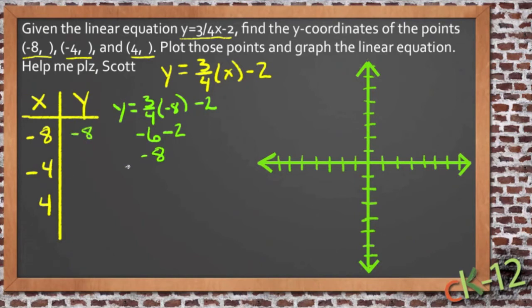Then we can do the next point. So we'll put in negative 4 for x, and we'll get y equals 3 fourths of negative 4 minus 2. 3 fourths of negative 4 would be negative 3, and negative 3 minus 2 is negative 5.